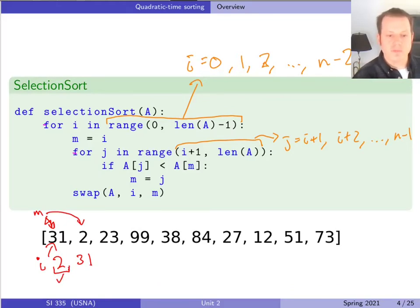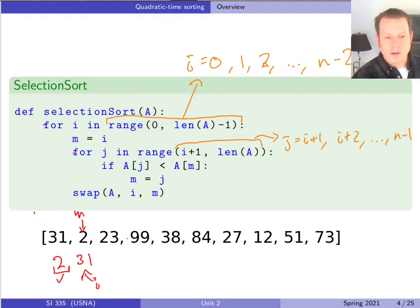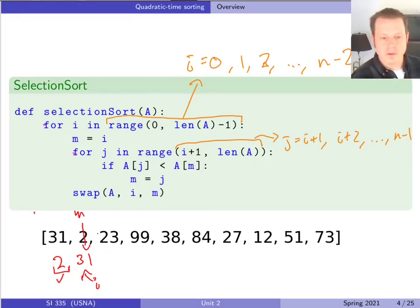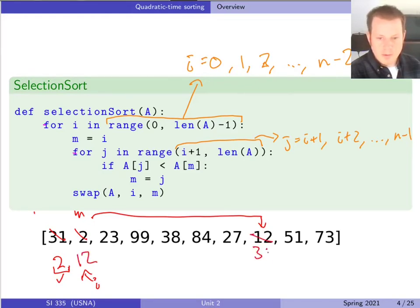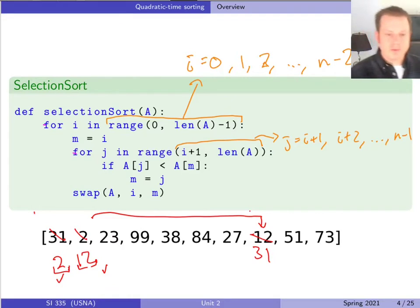We repeat the process starting from the second element. Now i points to index one, m starts at 31, and we find the next smallest: 23 is smaller, then 12 is smaller, so we update m again. That's the smallest of what's left, so we swap index one with index m — 31 becomes 12 and 12 becomes 31. Now 2 and 12 are both in the right position. Then 23 stays where it is because nothing else smaller remains. Selection sort always picks the next smallest thing from the rest of the array and puts it in the next position.